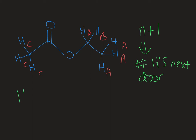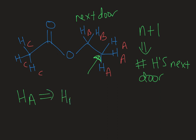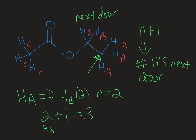Let's look at the signal we would expect for HA. HA is on this carbon, and next door to HA is the carbon atom that has HBs on it. So HA has two HB neighbors, meaning N equals 2. To calculate the splitting for HA, we take 2 — the number of neighboring HBs — plus 1, and that gives us 3.